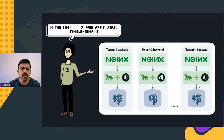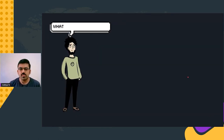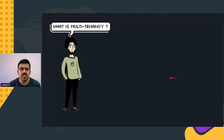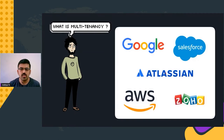Now that we have a fair understanding of single-tenant deployment, let's take things up a notch. In the SaaS world, multi-tenancy refers to an architecture paradigm in which a single instance of a software or web application is capable of serving requests from multiple customers. Some of the biggest SaaS companies in the world, such as Google, Salesforce, Atlassian, Amazon, and Zoho, use multi-tenant architectures to serve customers at scale.